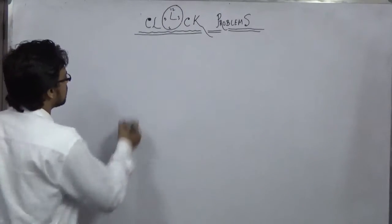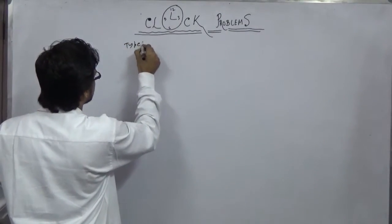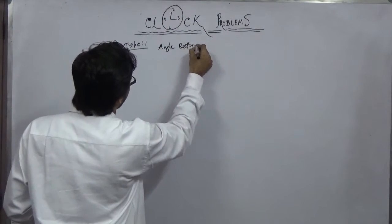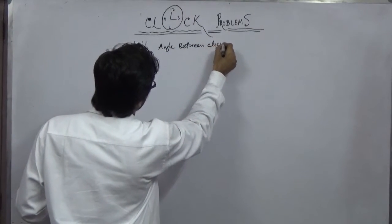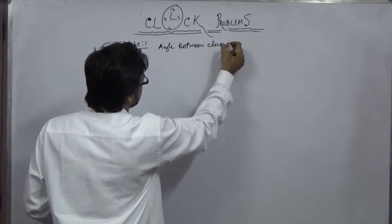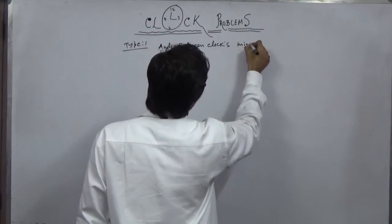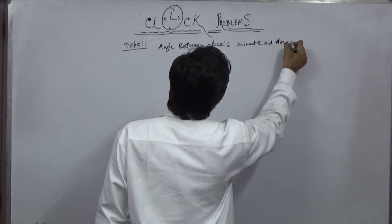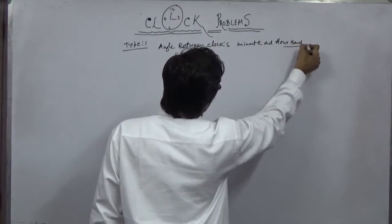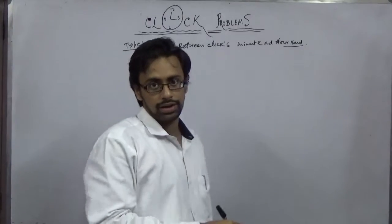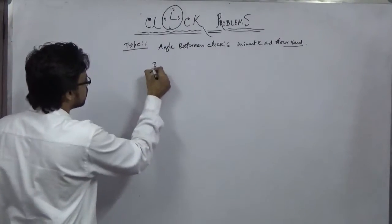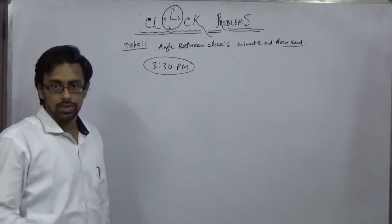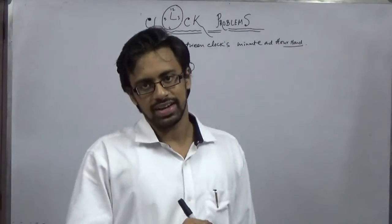Type 1: finding the angle between clocks — specifically the angle between the minute hand and the hour hand. For example, if I tell you the time is 3:30 PM, what is the angle between the minute hand and the hour hand?